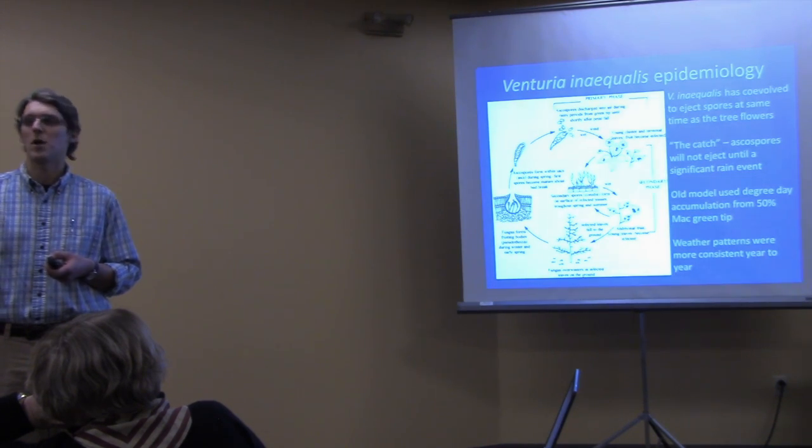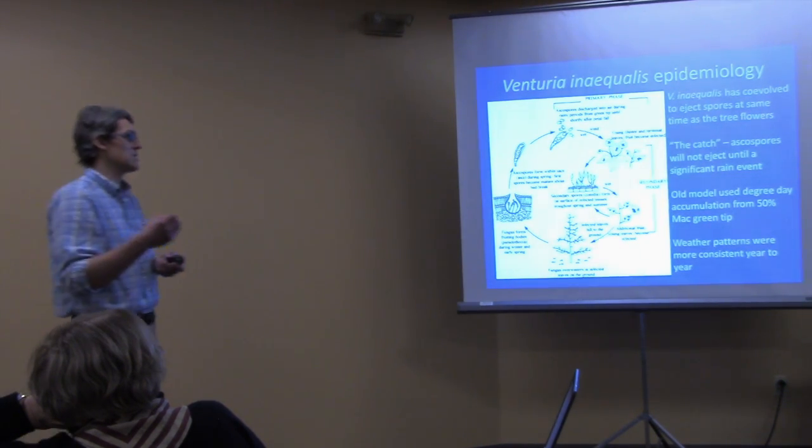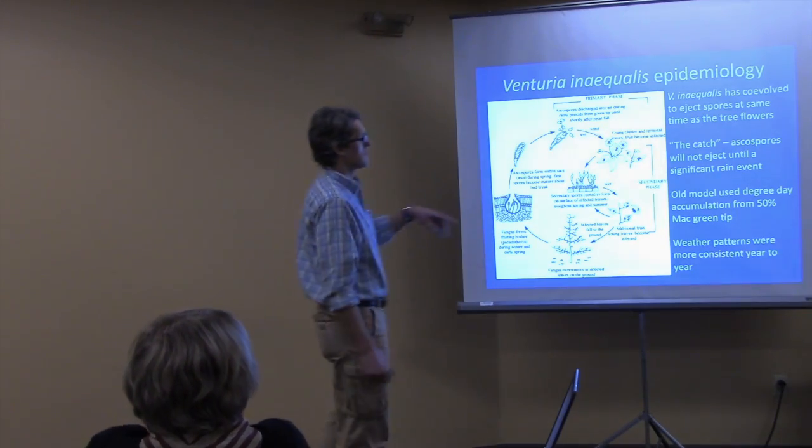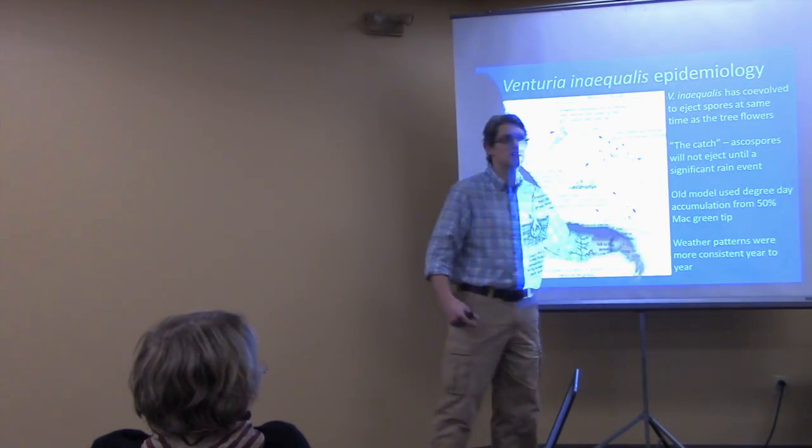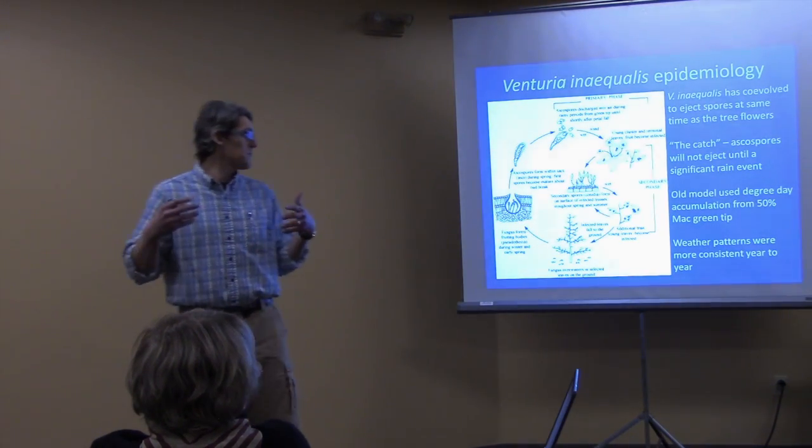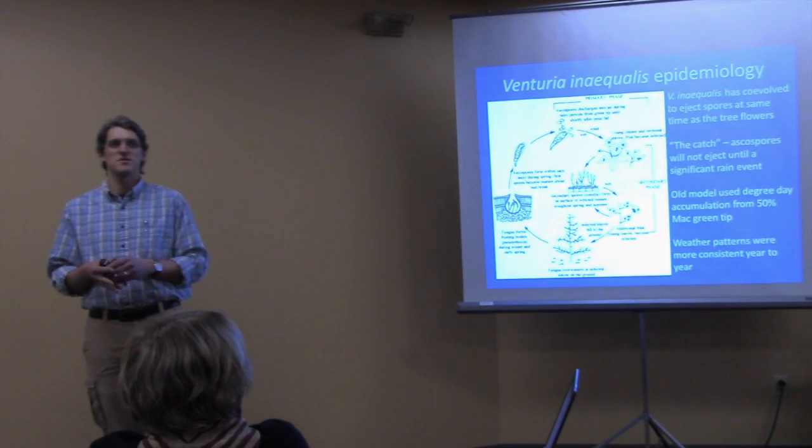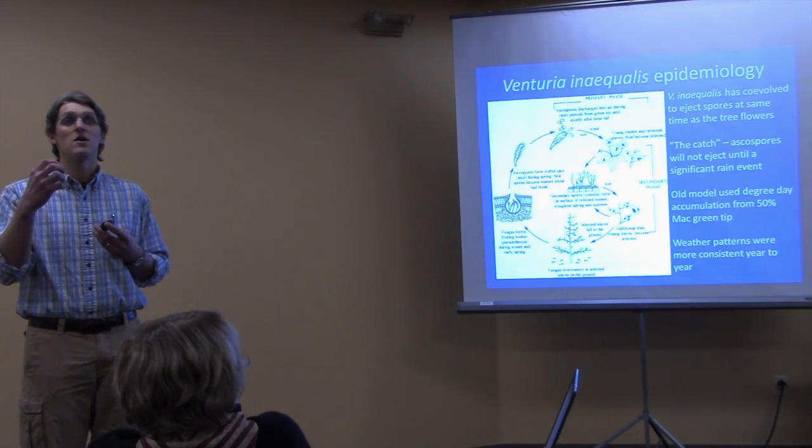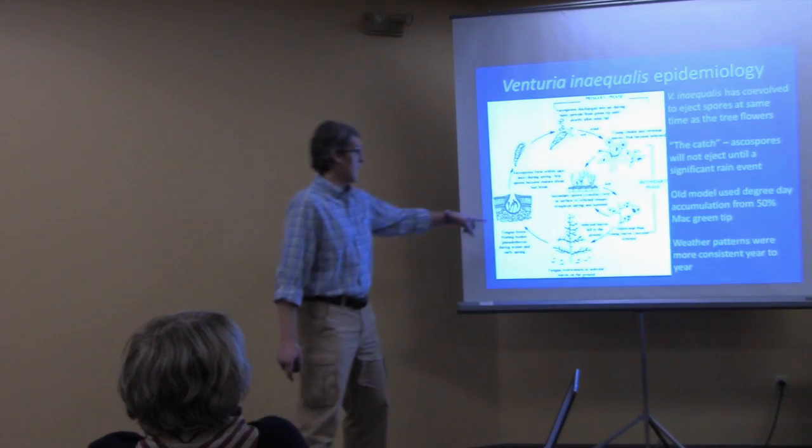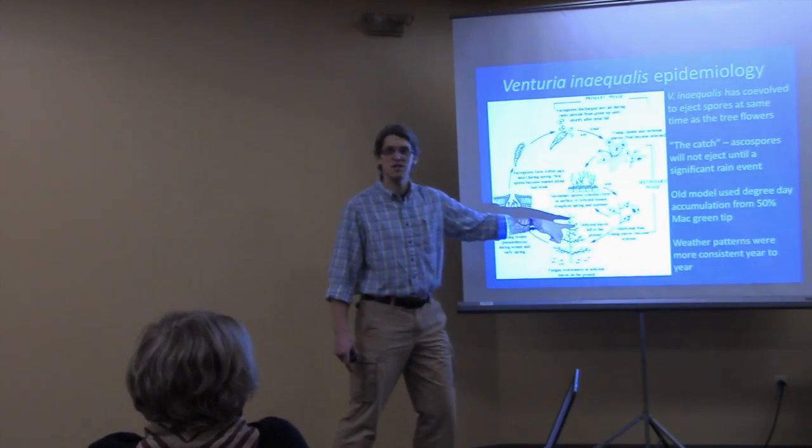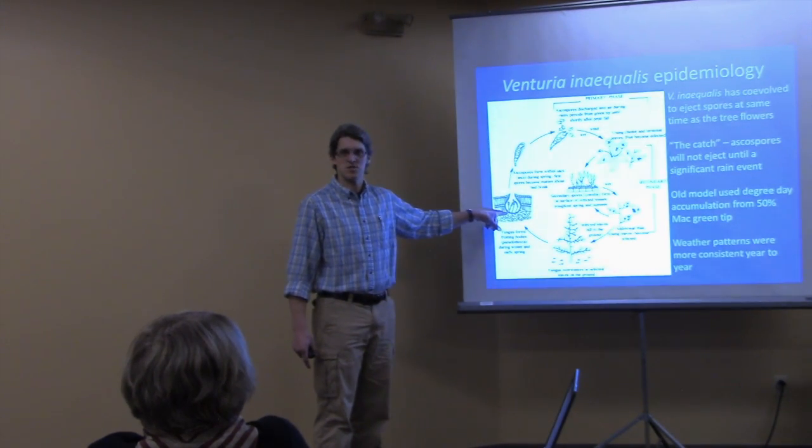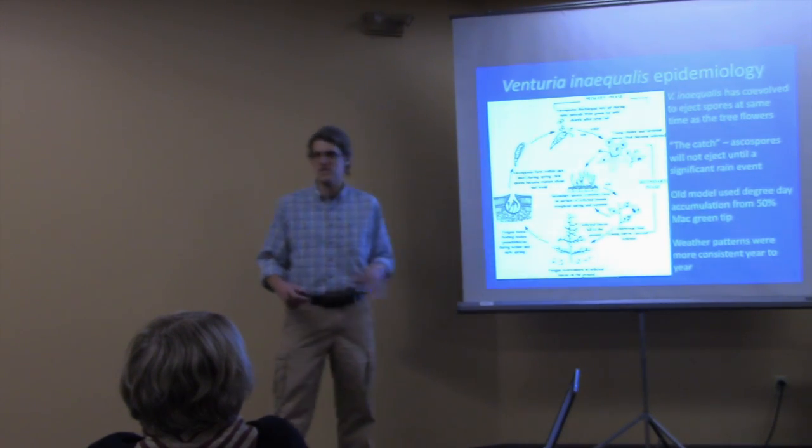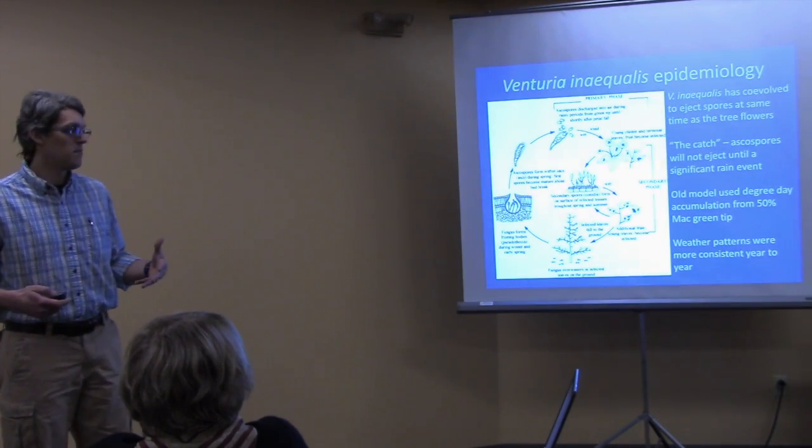At that point apple trees are also their most susceptible to this disease. Almost all of our current spray models of apple scab are based on using a degree day accumulation to 50% of Mac green tip. So that's when the tip of the flower bud is starting to swell and it's getting close to open. That means you also know that these ascospores are also getting mature. So we can see green tip really easy. You can't see mature ascospores so easy. We can and we actually do that. We actually monitor these spores as they mature.